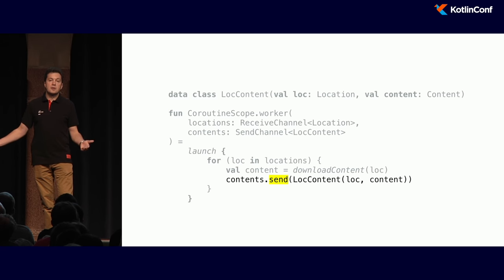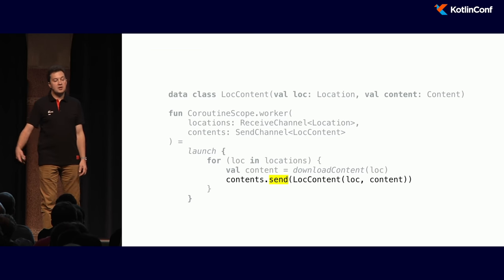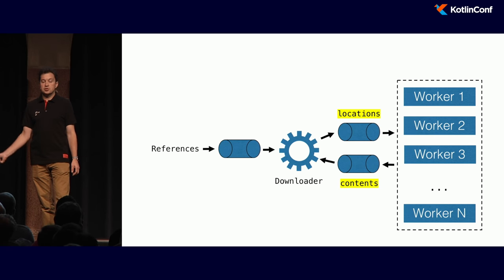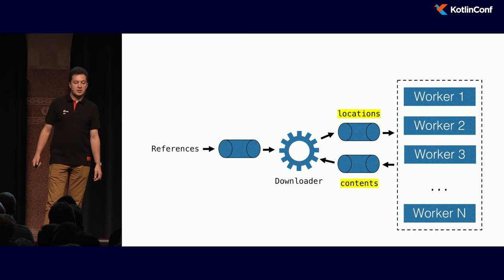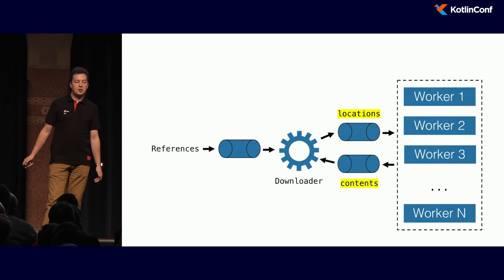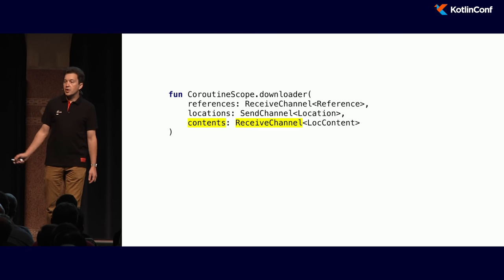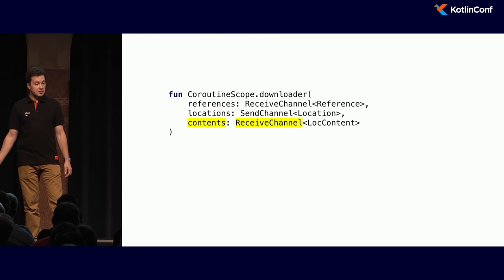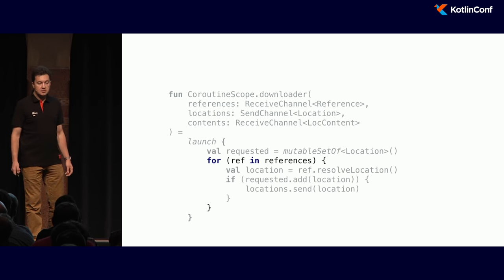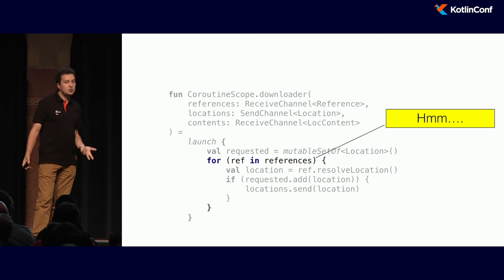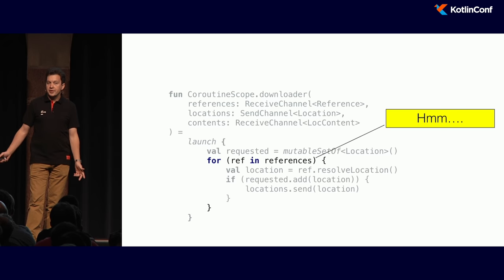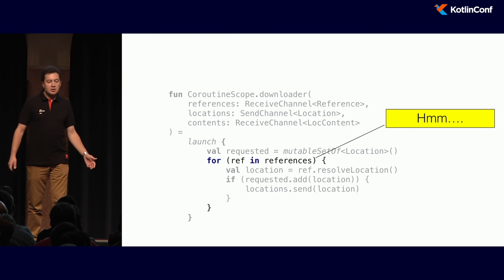Now the worker code can be finished — it just sends the location and content it downloaded to this channel. The picture now: downloader sends locations to workers; workers reply back with contents over another channel. The downloader now has three arrows going in and out: two channels in, one channel out. Inside, instead of just looping over references, the downloader now has two channels to receive from — references over one channel, or contents from another. We can't just loop for references, and if we used two coroutines, we'd be back to shared mutable state. For that, we have a `select` expression.